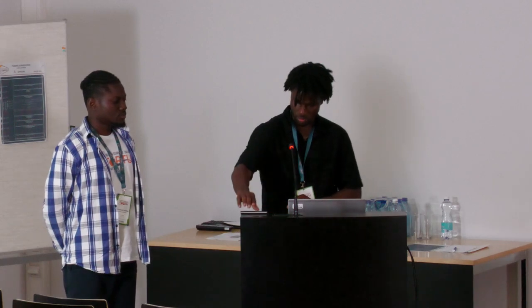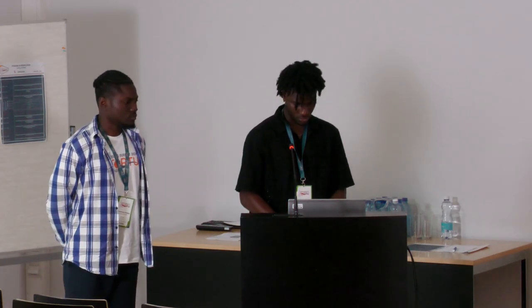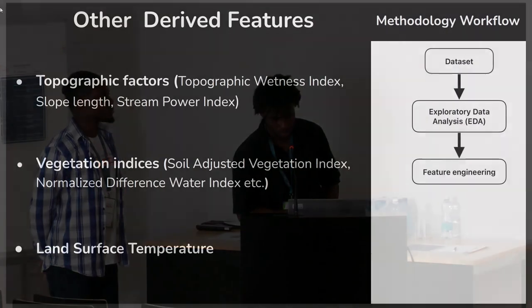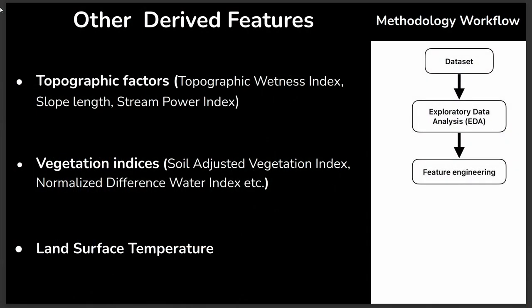A follow-up question asked whether other indicators like terrain roughness, terrain wetness, topographic indices, or soil texture were considered. The presenters confirmed they did use many such features, though they couldn't list all generated features on the slides. The Topographic Wetness Index (TWI) was highlighted as one of the most important variables, contributing significantly to better mapping each erosion category based on feature importance analysis.